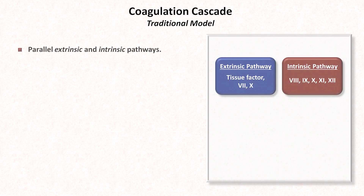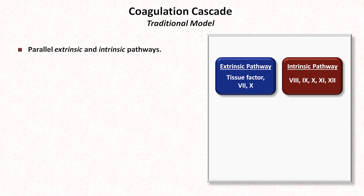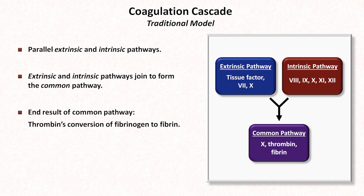It consists of parallel extrinsic and intrinsic pathways, so called based on whether or not the trigger was a compound that was extrinsic or intrinsic to the endothelium. The extrinsic pathway involves an integral membrane glycoprotein called tissue factor, along with clotting factors 7 and 10. The intrinsic pathway involves clotting factors 8, 9, 10, 11, and 12. The end result of both of these is the common pathway, which involves factor 10, along with thrombin and fibrin.